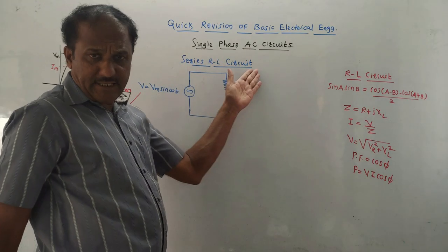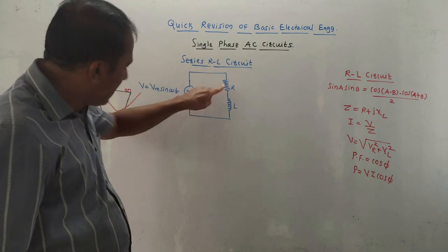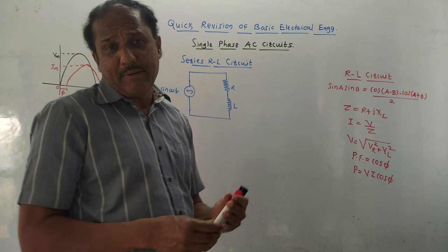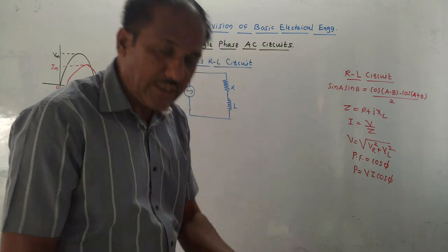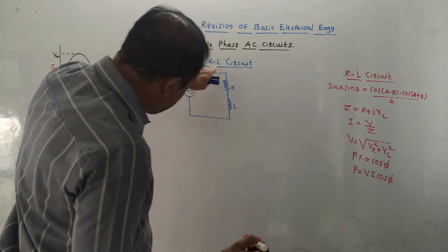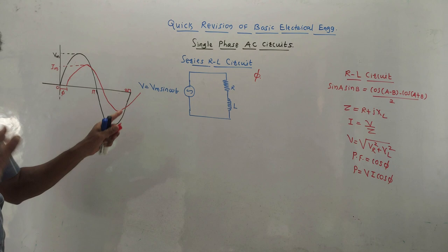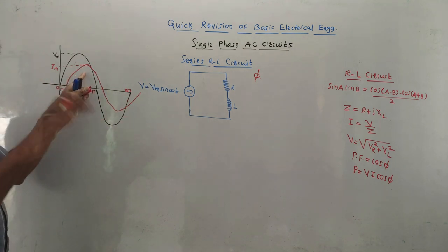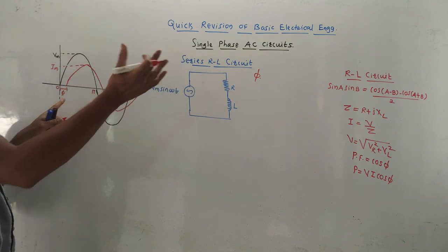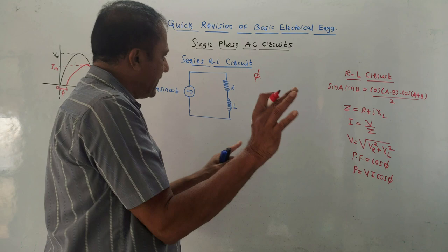Next is the series RL circuit. Since the name indicates RL circuit, draw a resistor and inductor in series with the voltage source — Vm sin(ωt). In a purely inductive circuit, current lags by an angle π/2 compared to voltage. If it is an RL circuit, the angle is not π/2 — it is some angle φ. The waveform of voltage and current remains the same; only the angle is changed from π/2 to φ.